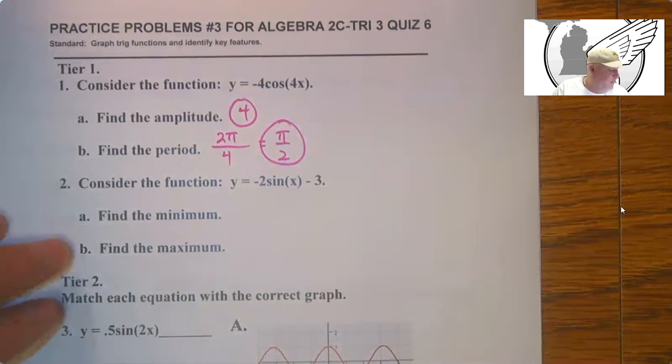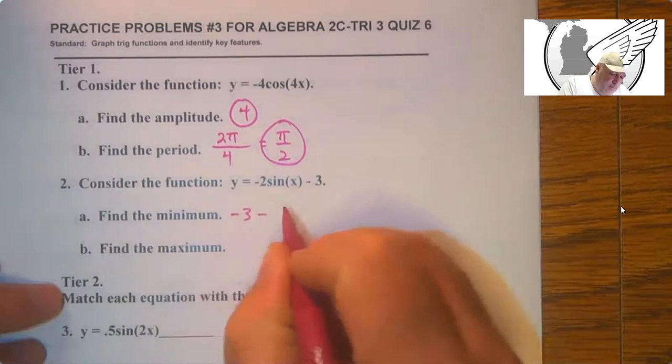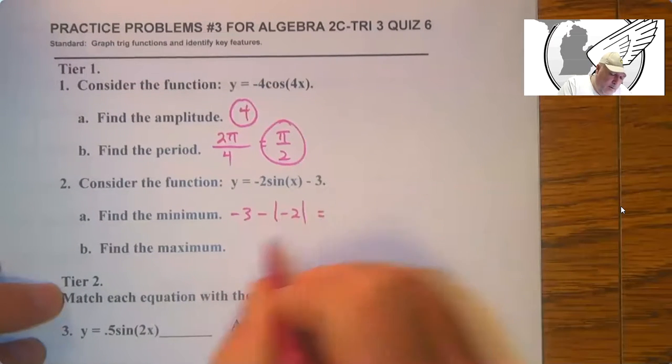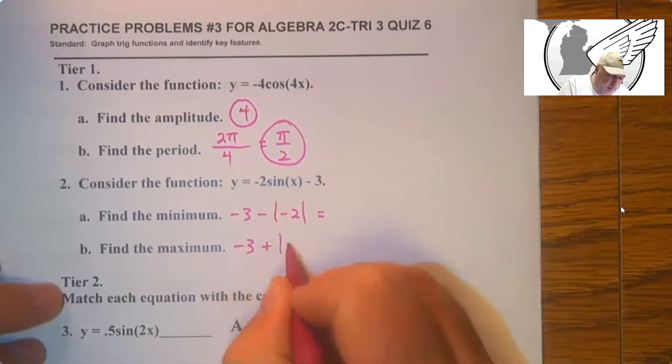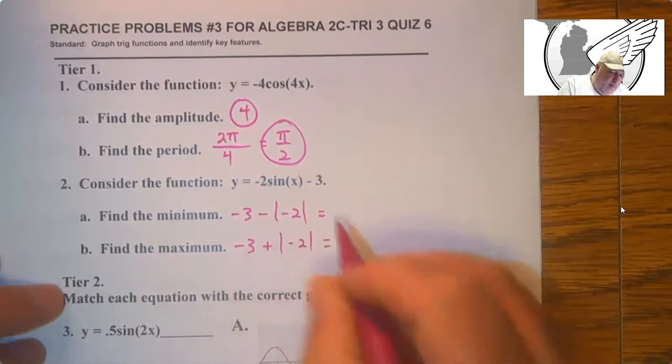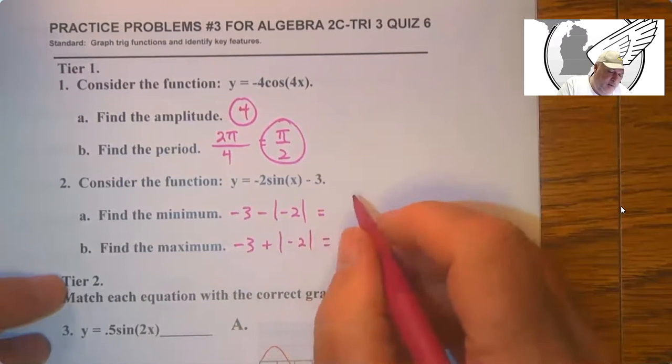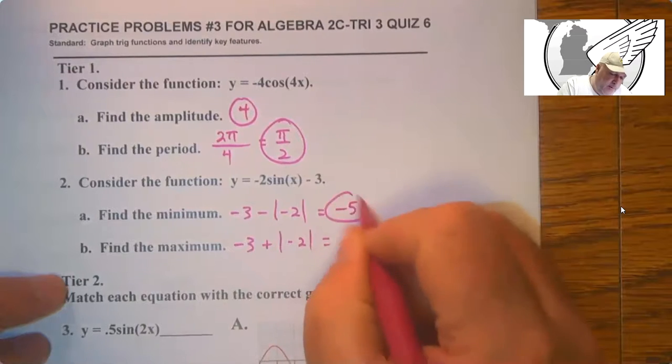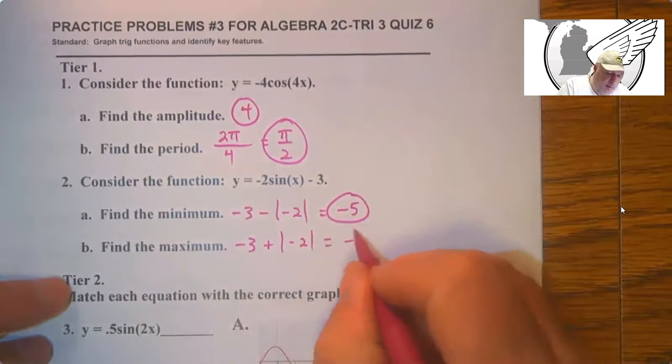Minimum and maximum. So k minus absolute A and k plus the absolute value of A. So this is going to be negative 5 and this is going to be negative 1.